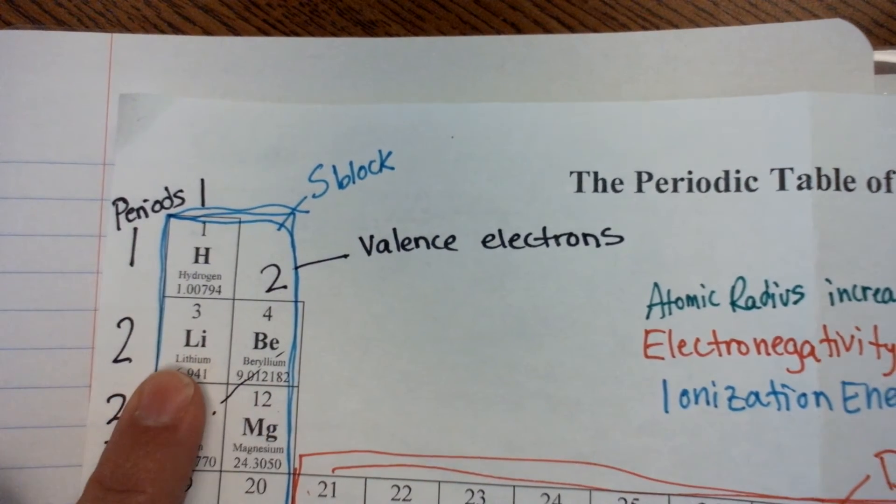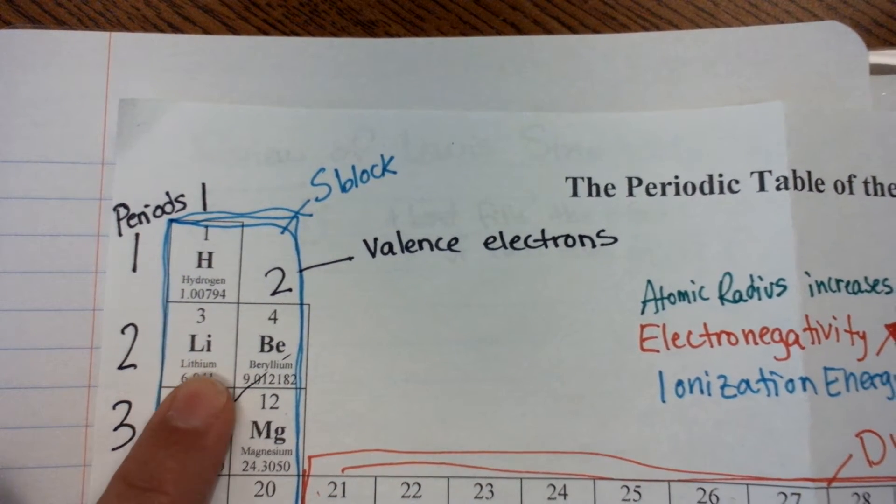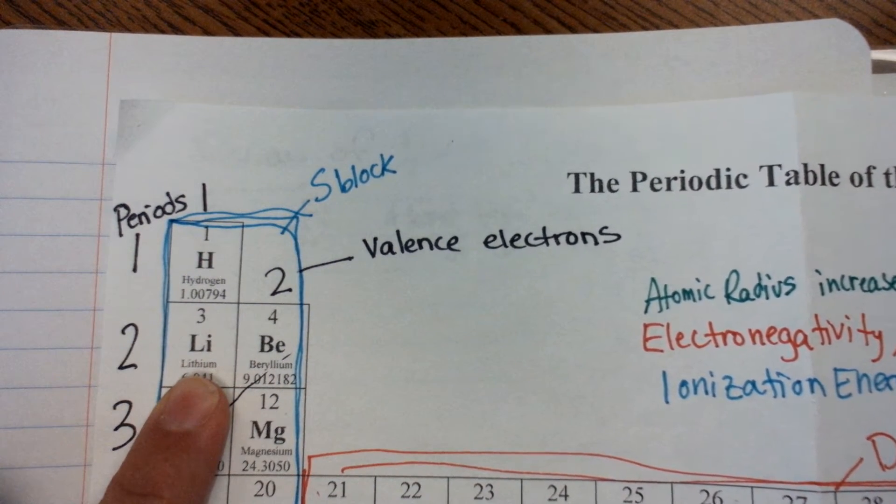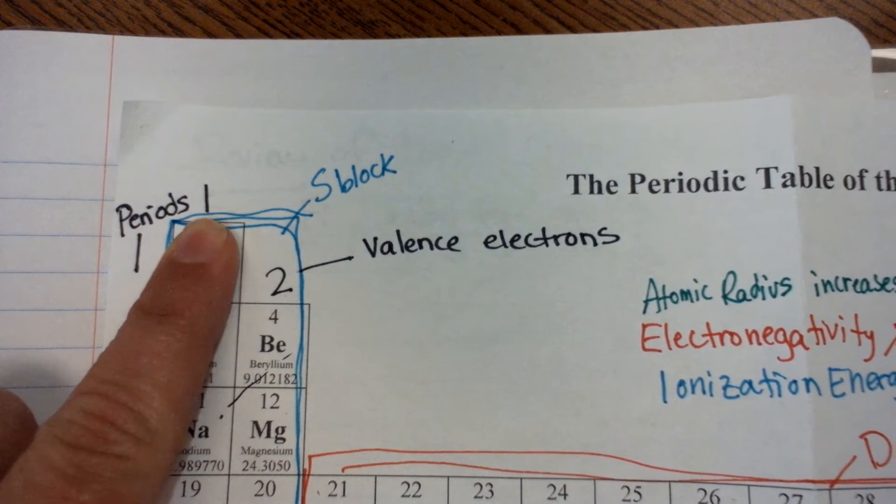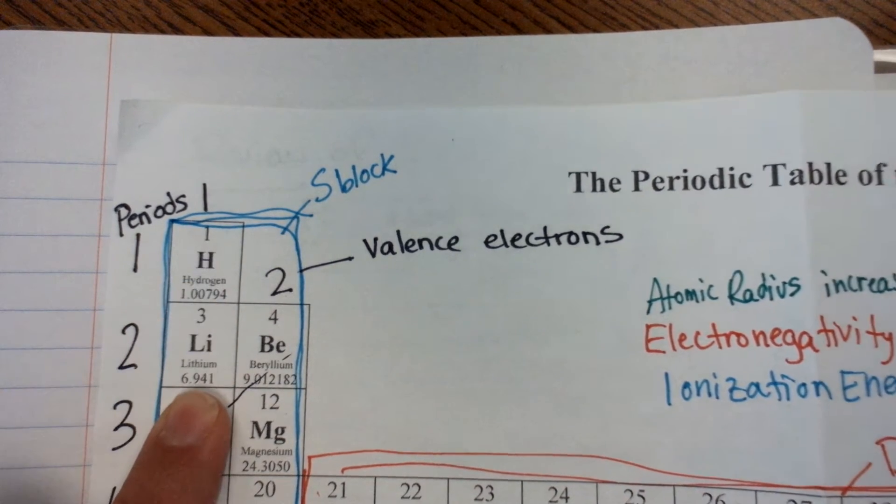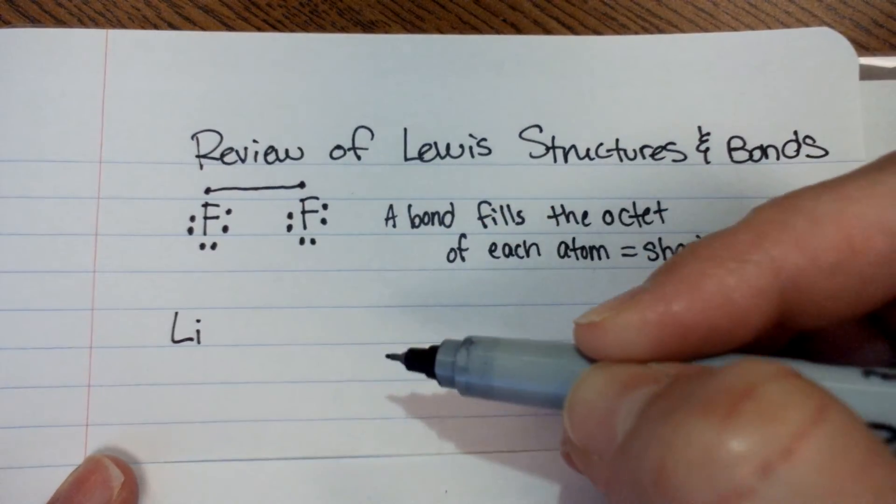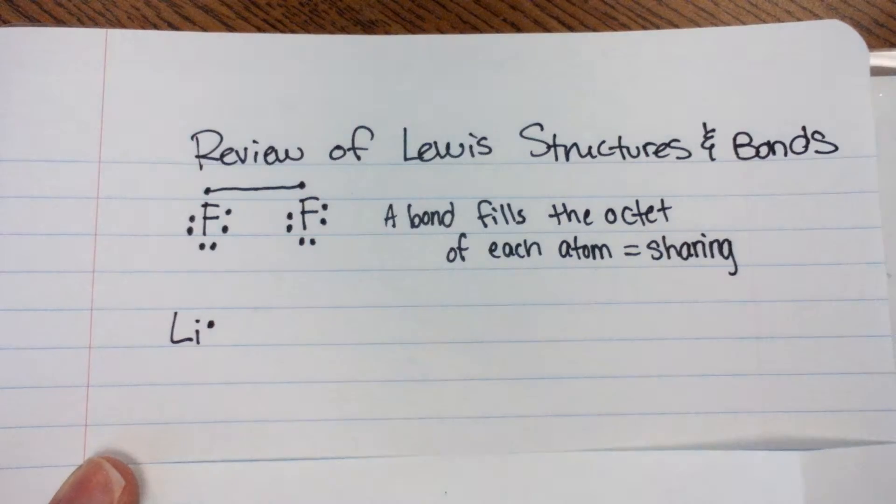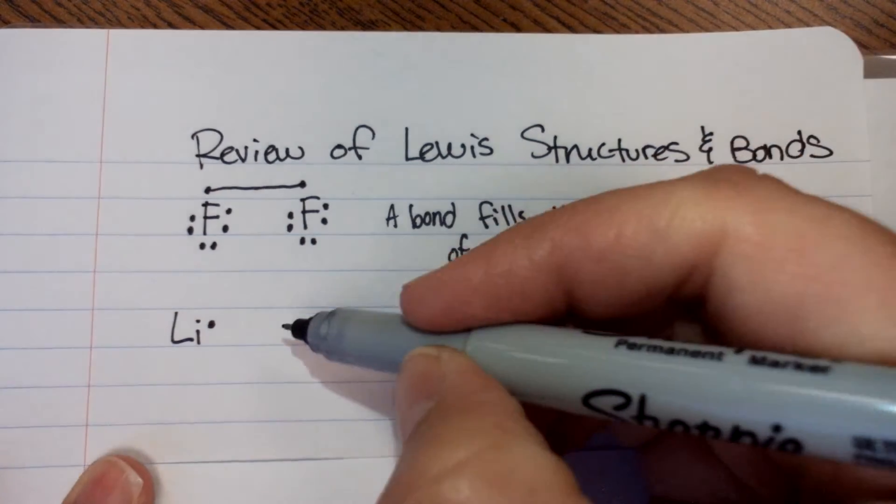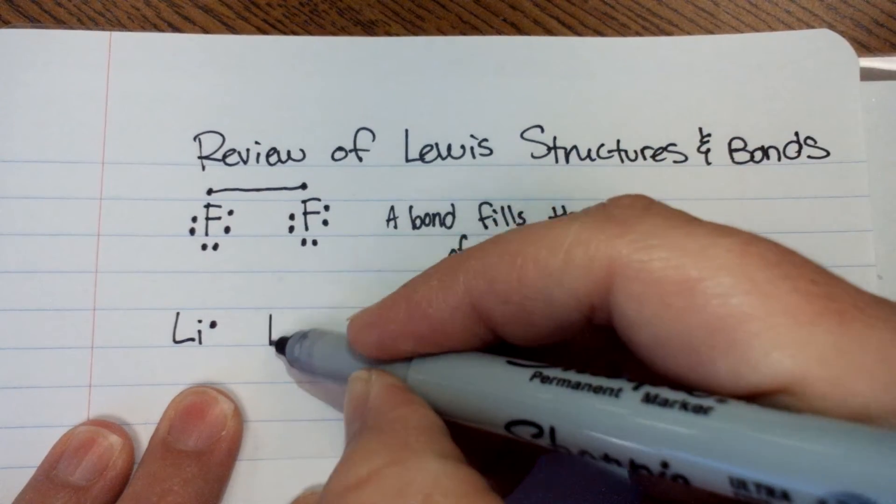Let's consider some other different atoms, okay? If we look at, let's say, lithium. Lithium has one valence electron. So if we consider lithium, all right, we have one valence electron.